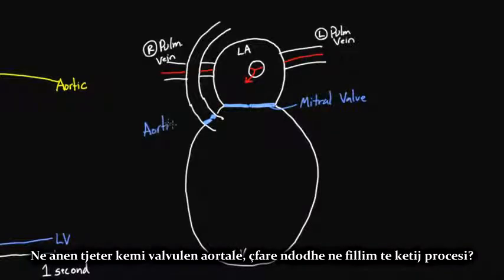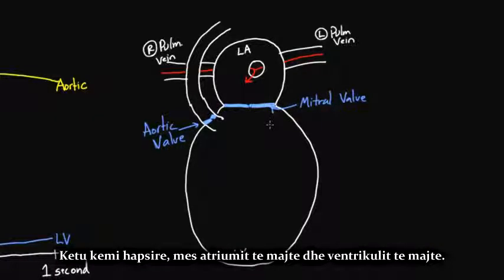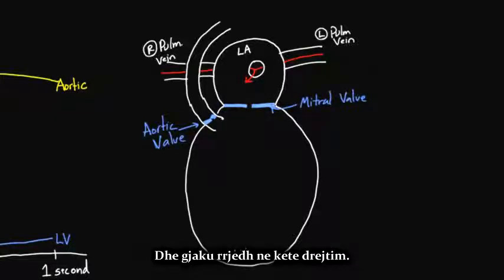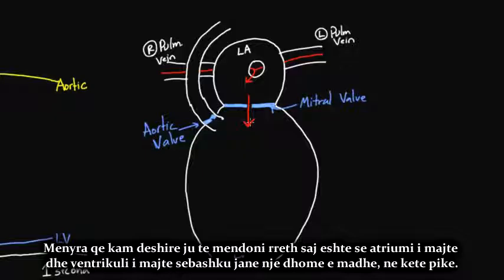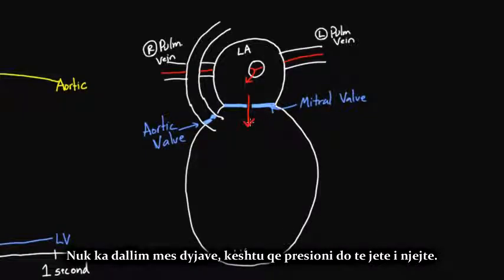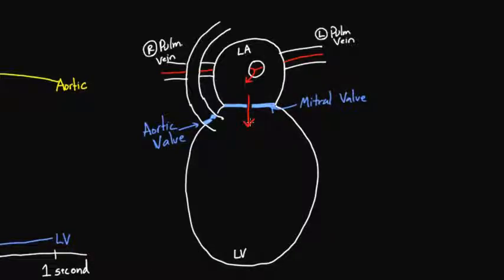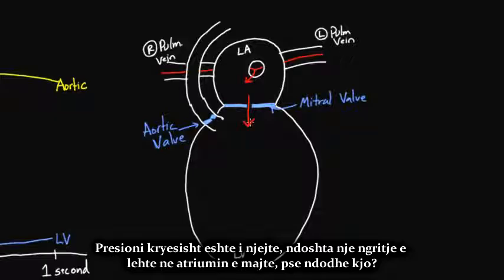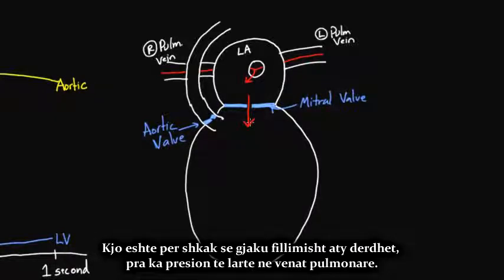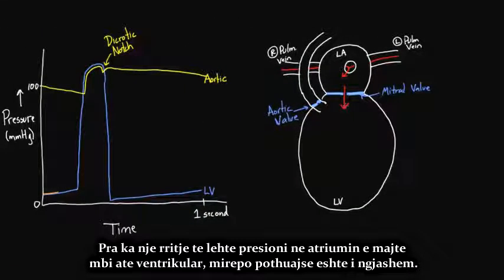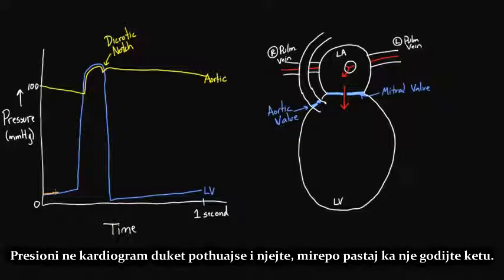At the beginning of this process, there's a free open space between the left atrium and left ventricle — the valves are not closed — and you're actually getting blood flow from the atrium into the ventricle. The way to think about it is that the left atrium and left ventricle are really one giant chamber at this point, so the pressure would be basically the same. There may be a slight increase in the left atrium side because that's where blood is initially coming in from the high-pressure pulmonary veins.